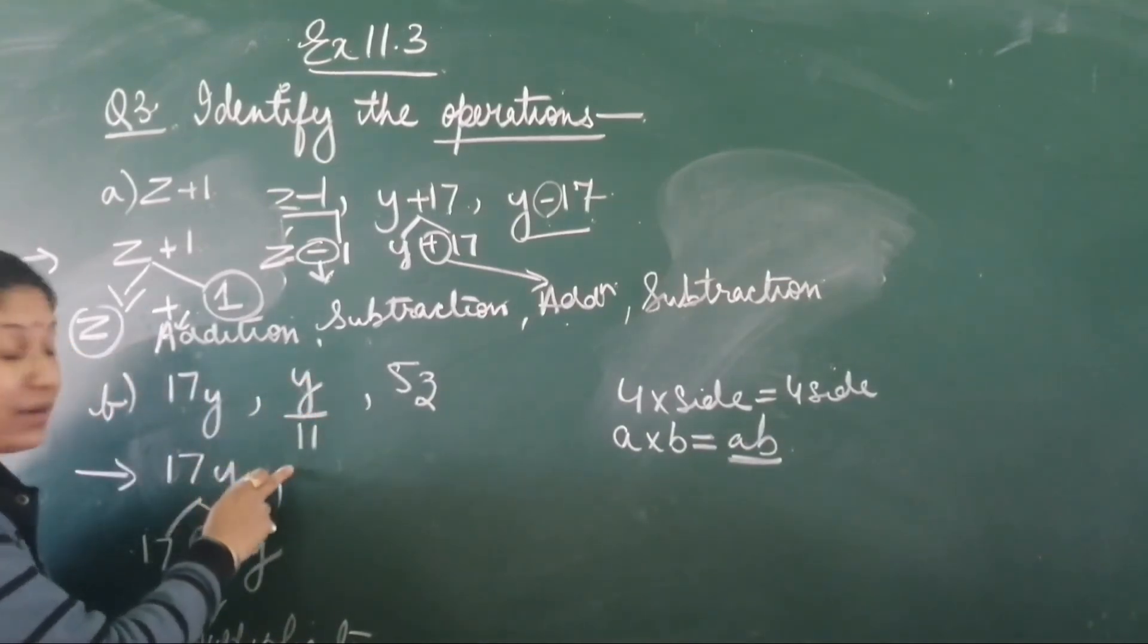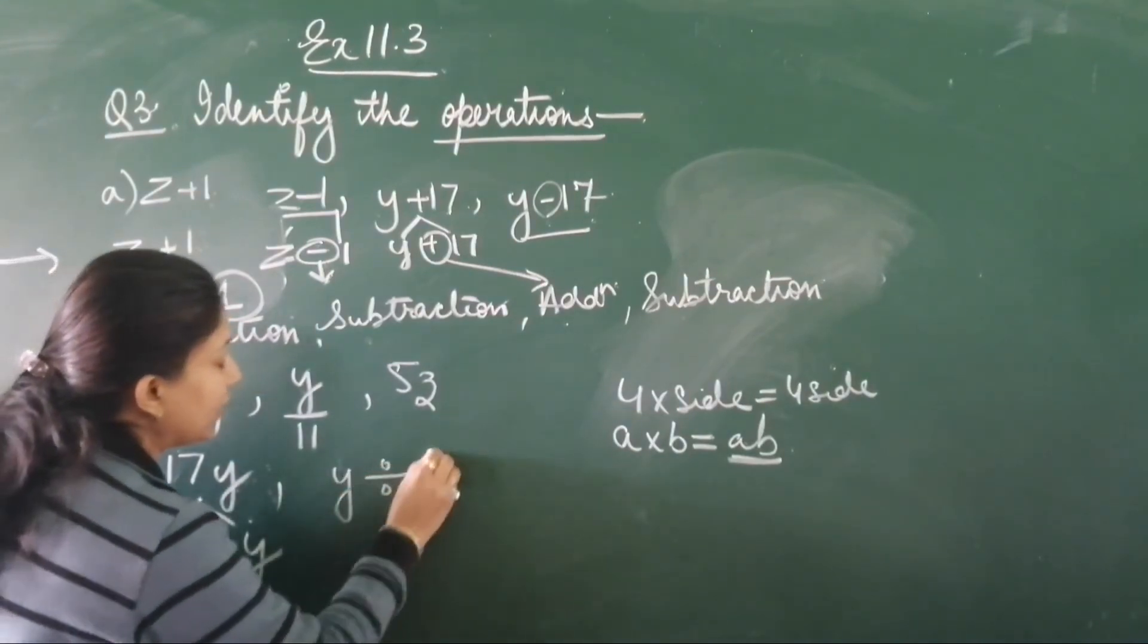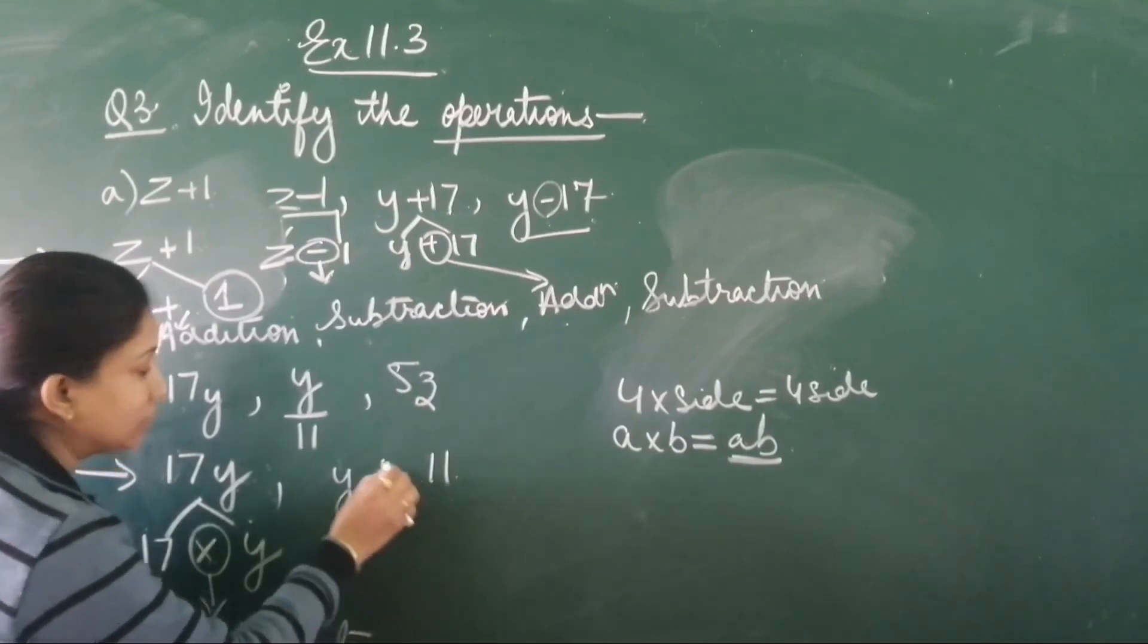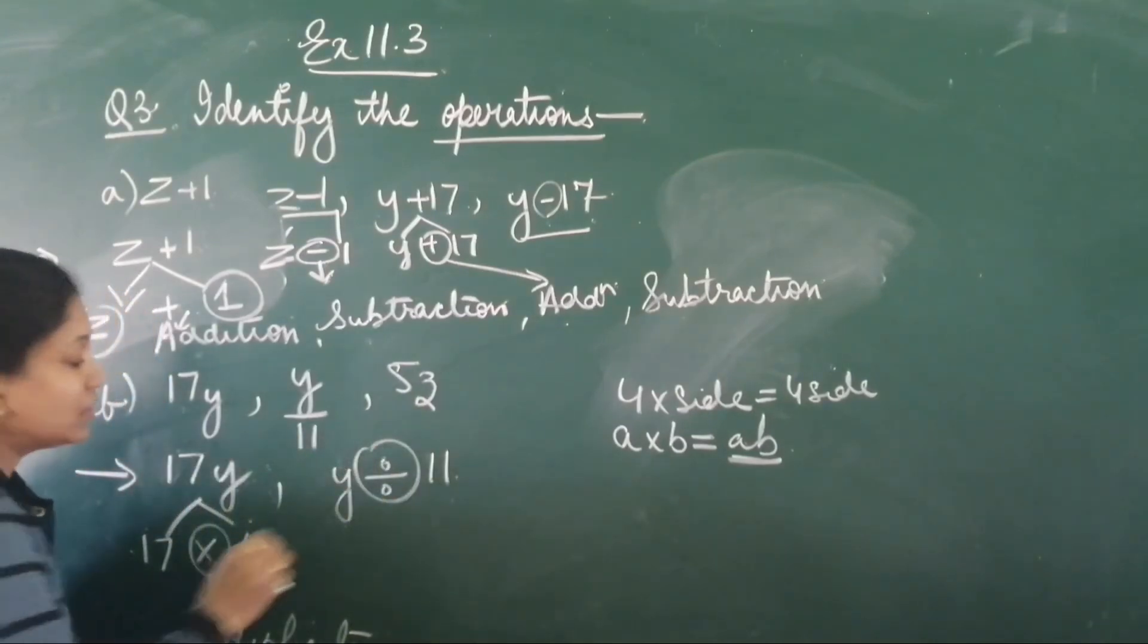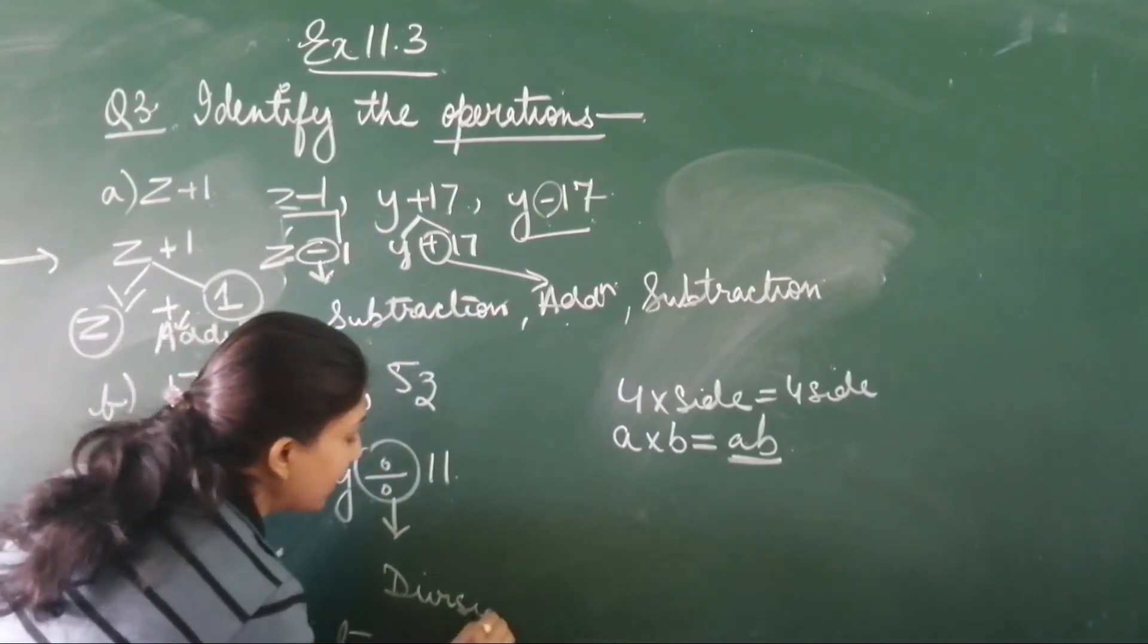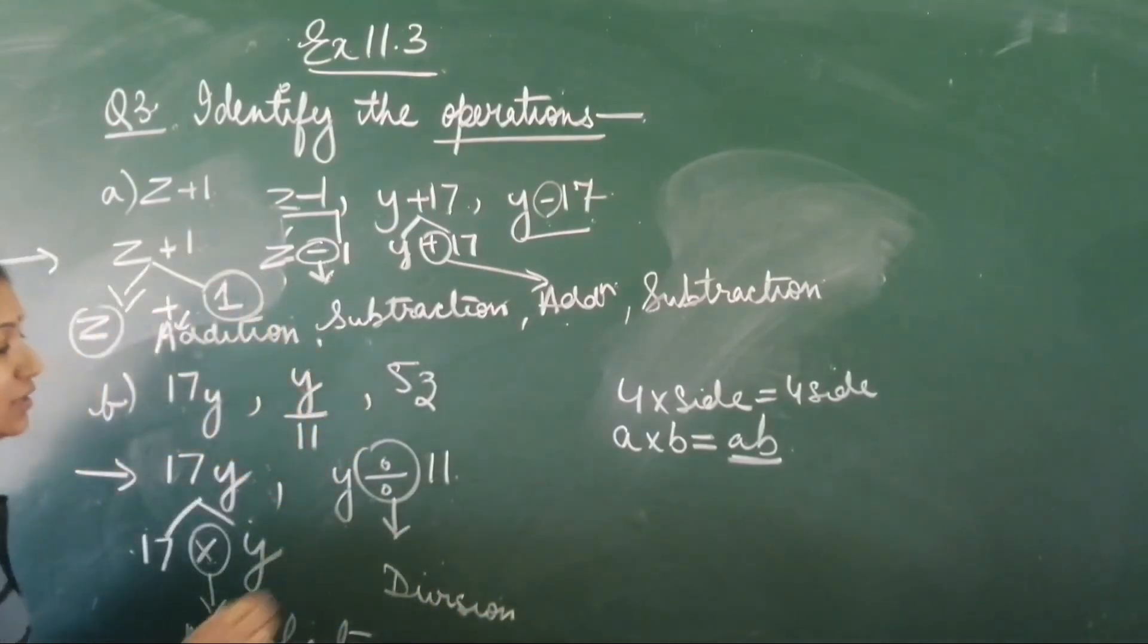Same way, come to the next one: y divided by 11. See, one term, the second term, and this is the sign. This sign is used for division. It is very easy.